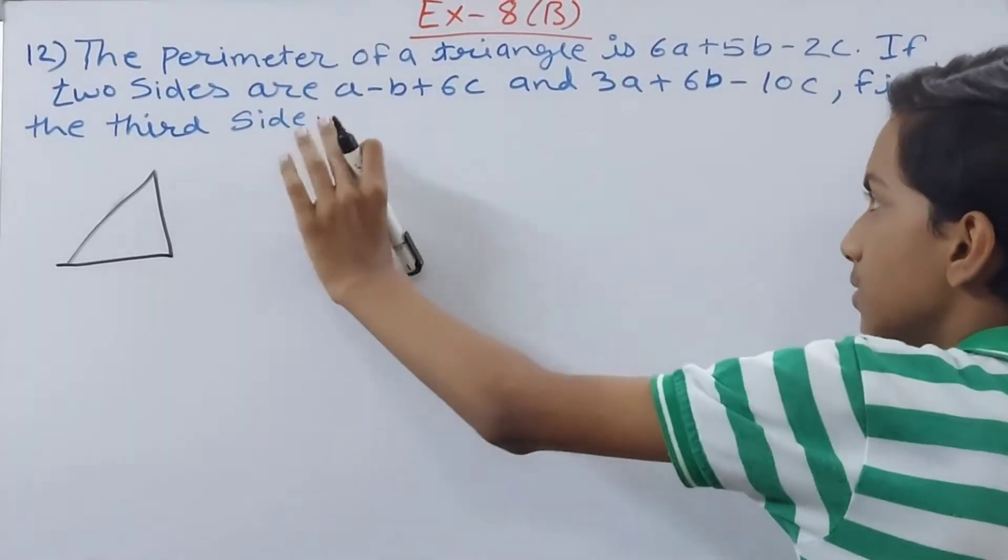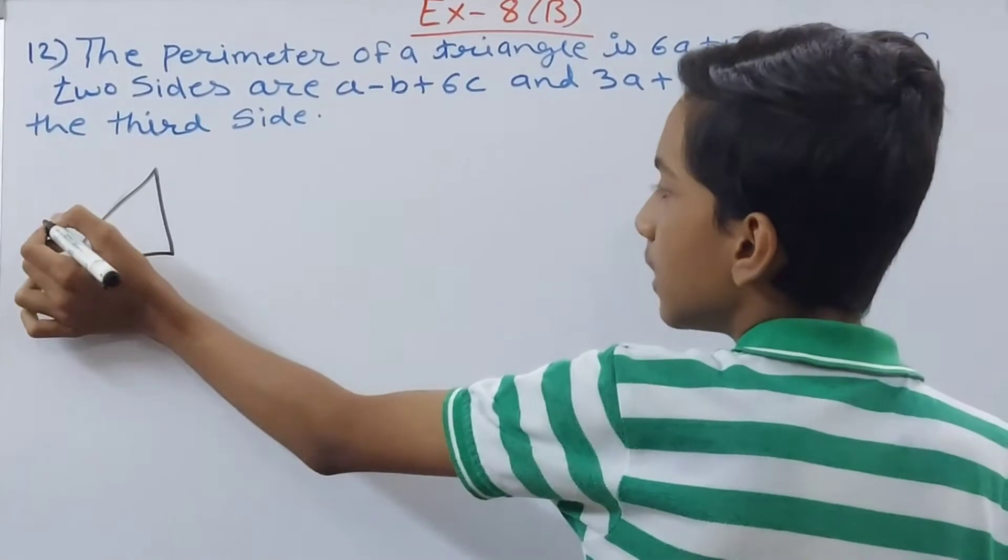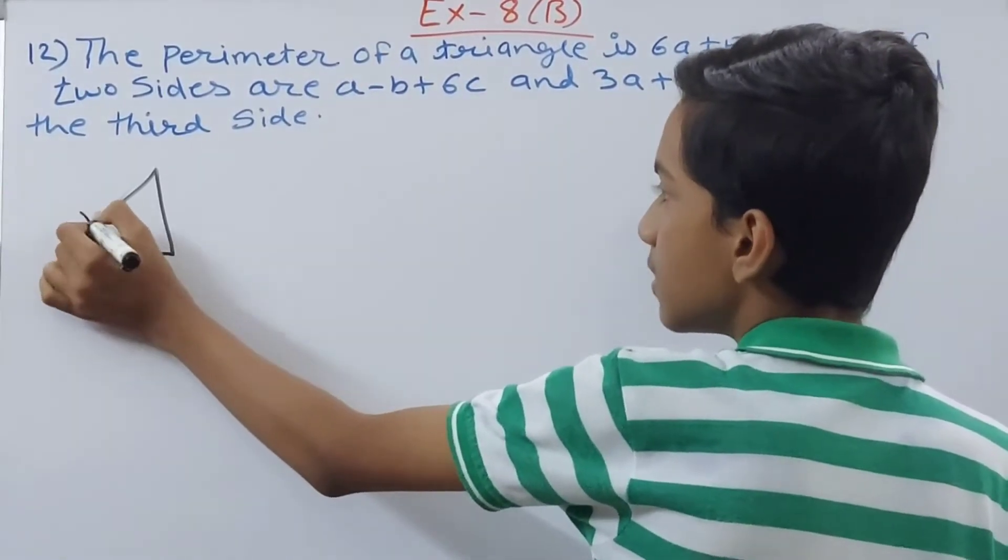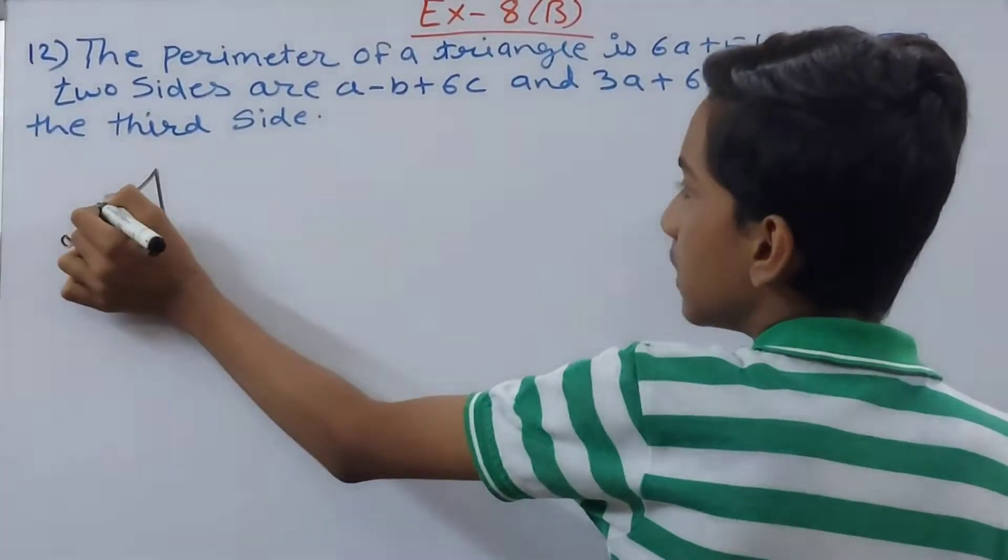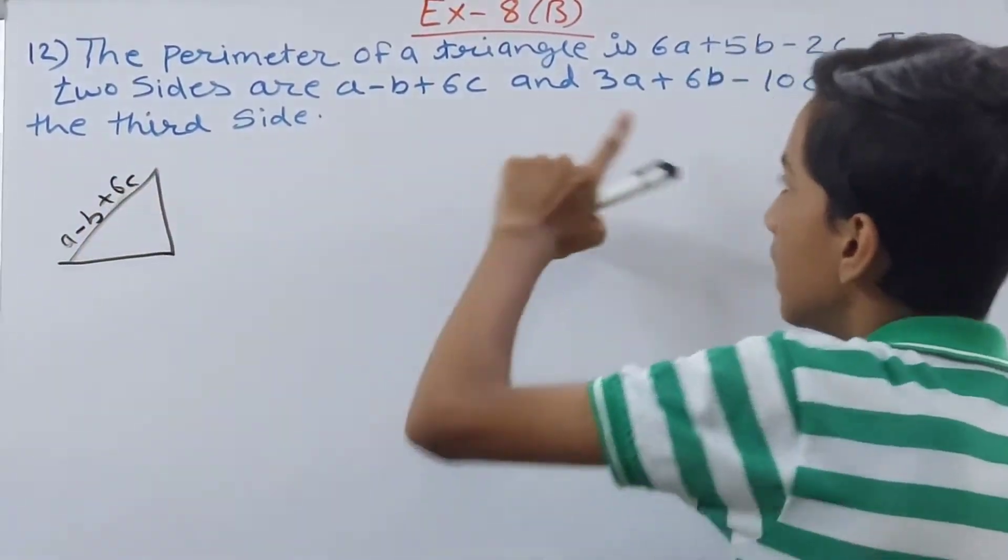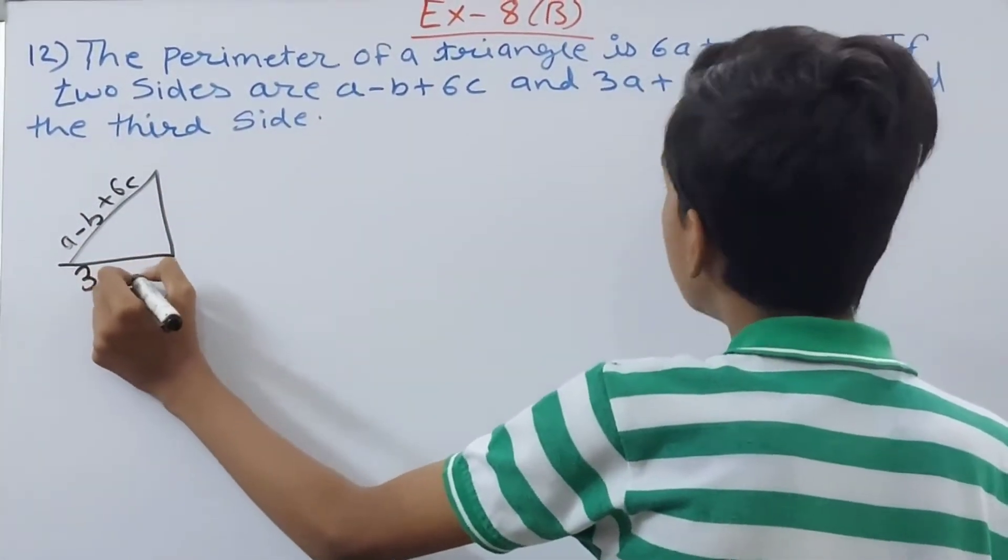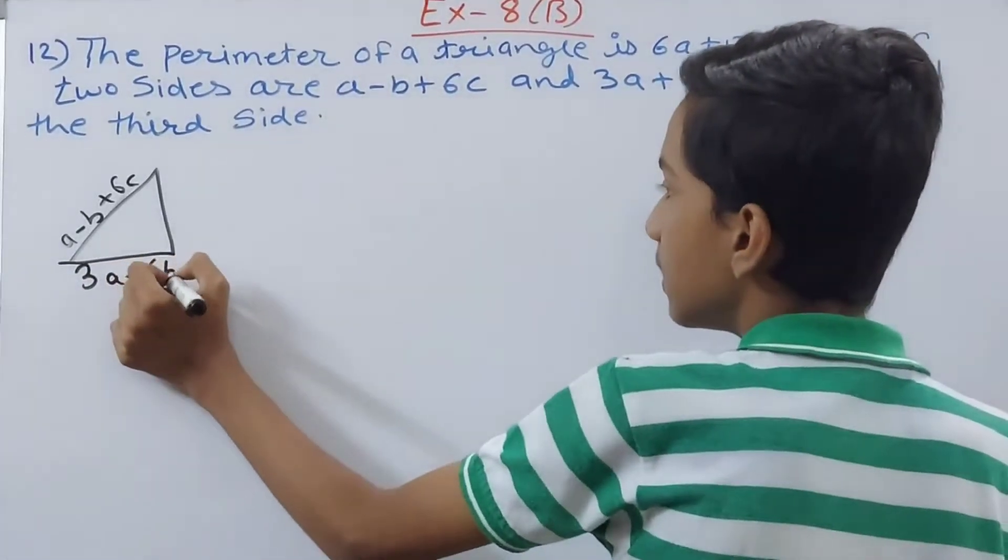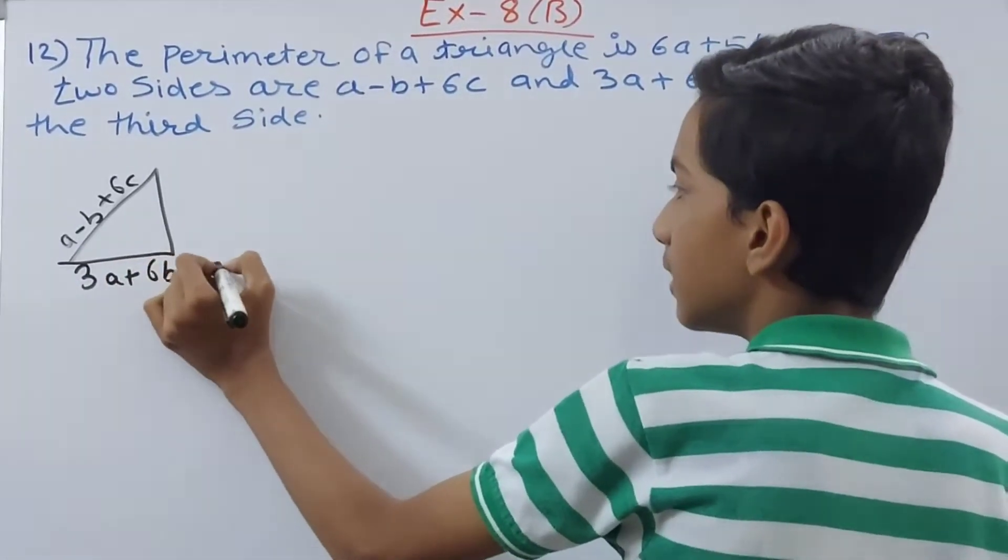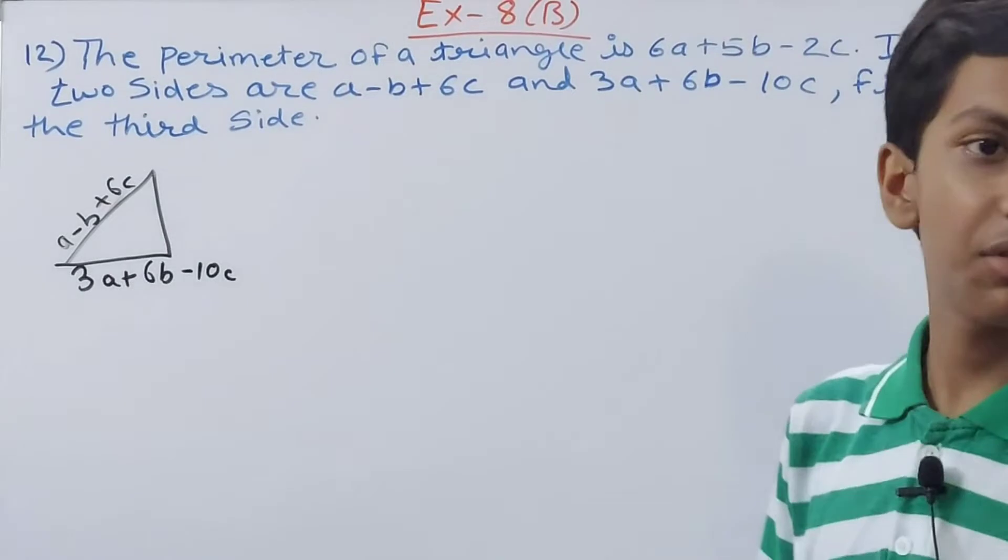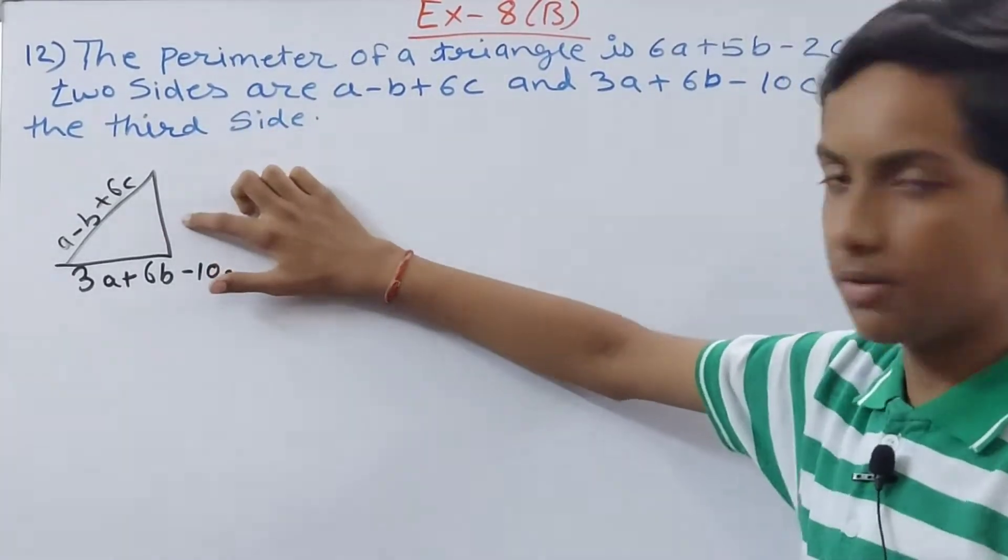The first side is a - b + 6c. This is one side. And then we have 3a + 6b - 10c. So both of these sides are given to us, but this one is not given.